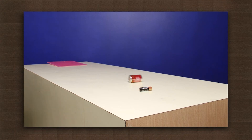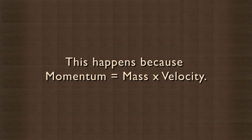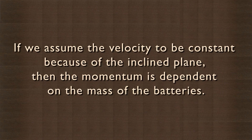It covers a longer distance than the smaller battery. This happens because momentum equals mass into velocity. If we assume the velocity to be constant because of the inclined plane, then the momentum is dependent on the mass of the batteries.